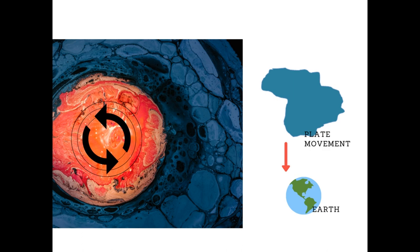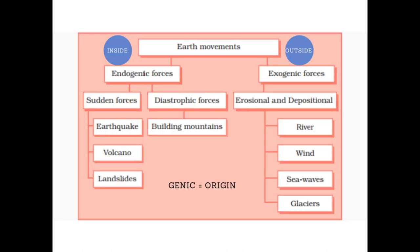Earth's movements are mainly of two forces: one is endogenic force and the other is exogenic force. The word 'endo' means inside — these forces occur within the Earth. Likewise, the word 'exo' means outside — these forces happen on Earth's exterior. The word 'genic' means origin, that is the starting point.